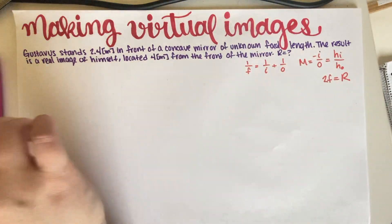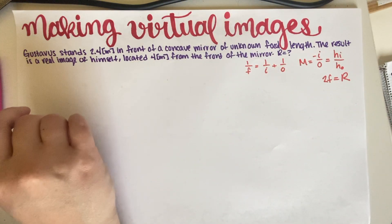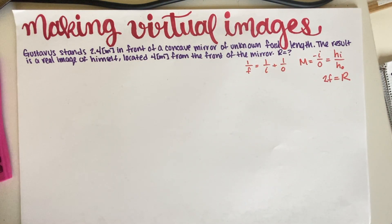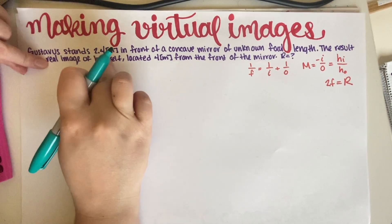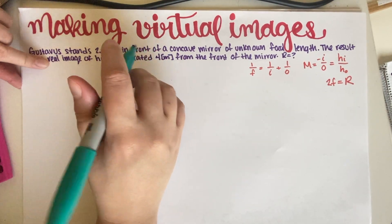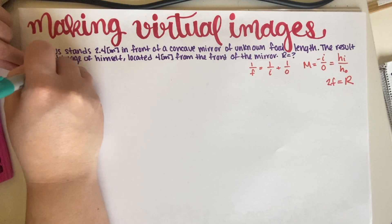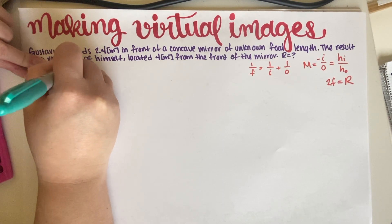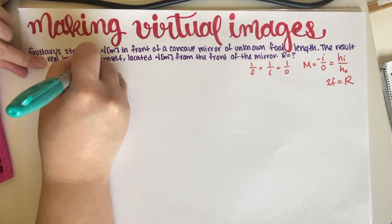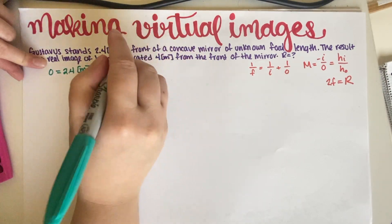So let's just work out our information. So Gustavus is standing 2.4 meters in front of a mirror, so that means that our O is 2.4 meters.